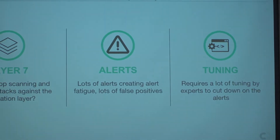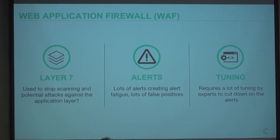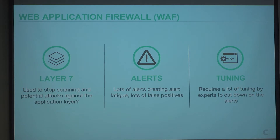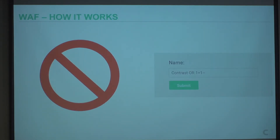A web application firewall operates at Layer 7 — the highest layer. It's used to stop scanning and potential application-layer attacks against web applications: SQL injection, command injection, XSS. It's really good at XSS, and it does some things with DDoS prevention. From an alerting perspective, it creates a lot of alerts with many false positives because there's no context. Tuning is a really big problem — new CVEs and bypasses require constant updates.